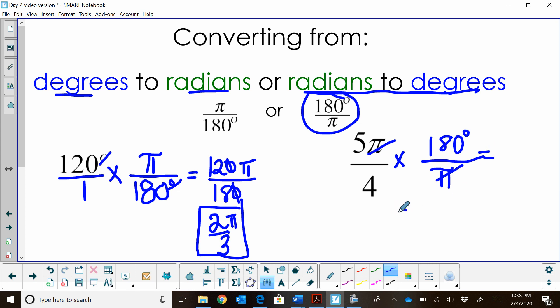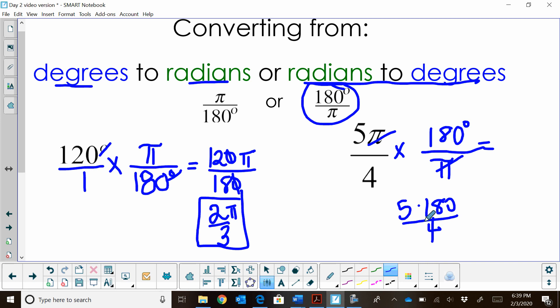We end up with 5 times 180 all over 4. I'm going to work smart and just divide 180 by 4. That's 5 times 45, and that ends up being 225 degrees. There is my answer in degrees.